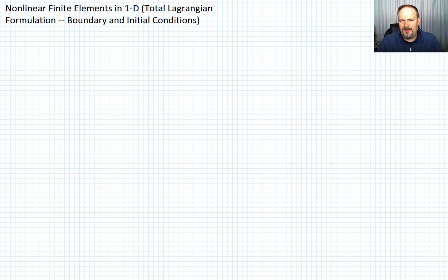Moving on in our discussion of the Total Lagrangian formulation for this 1D rod problem, I want to talk now about the boundary and initial conditions. I think it's probably obvious, but I'd like to articulate it so that it's clear to everybody.